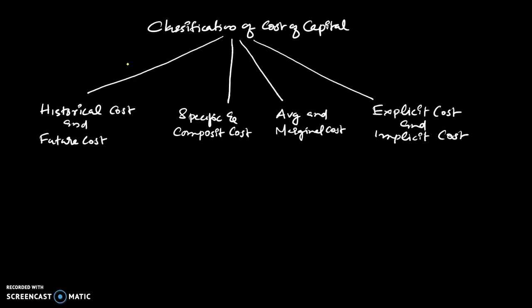Friends, in this video we are going to understand classification of cost of capital. We can classify the cost of capital as historical cost and future cost, then specific and composite cost, average and marginal cost, and finally explicit cost and implicit cost.